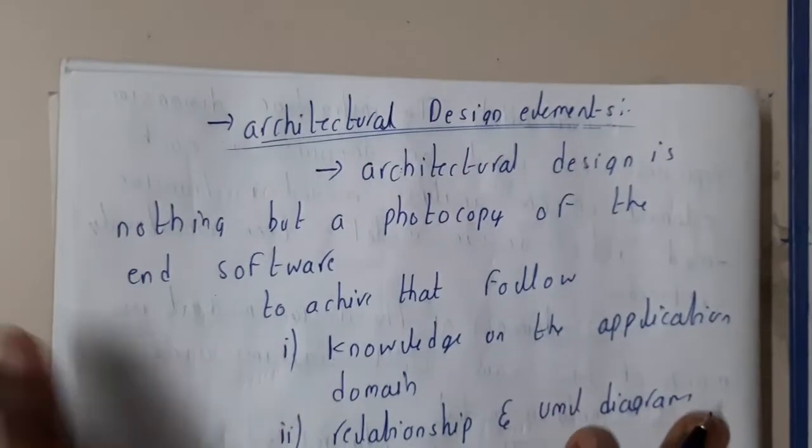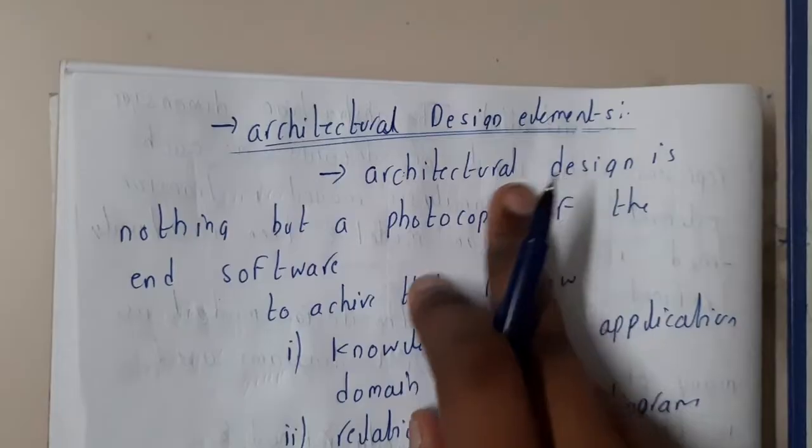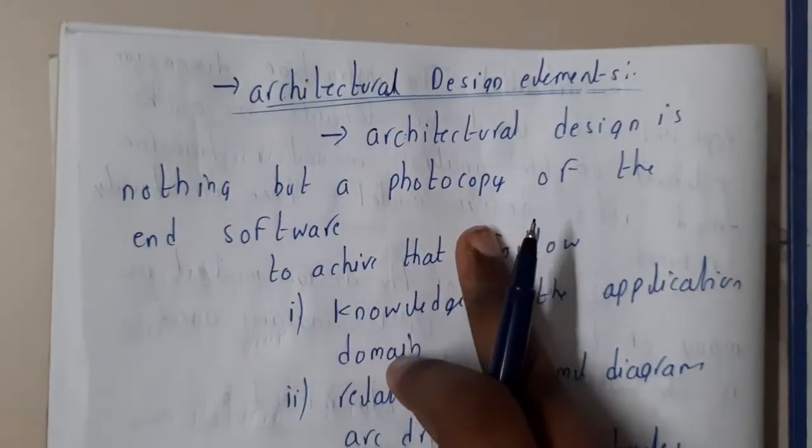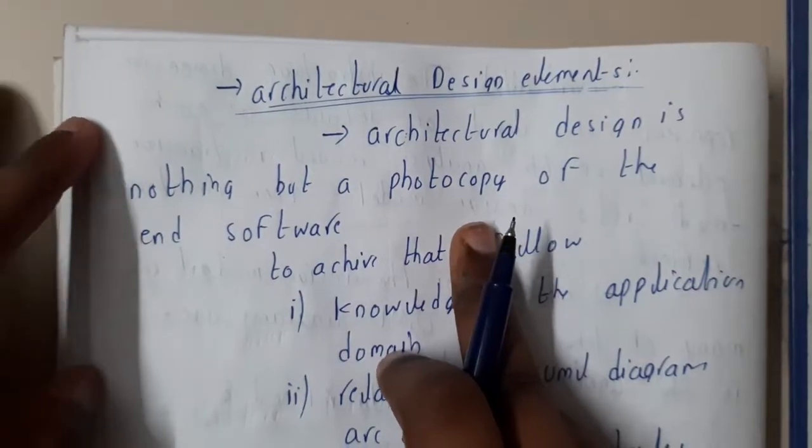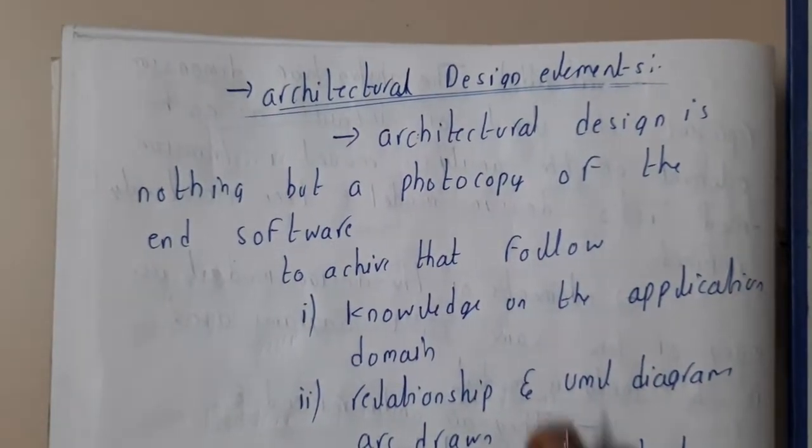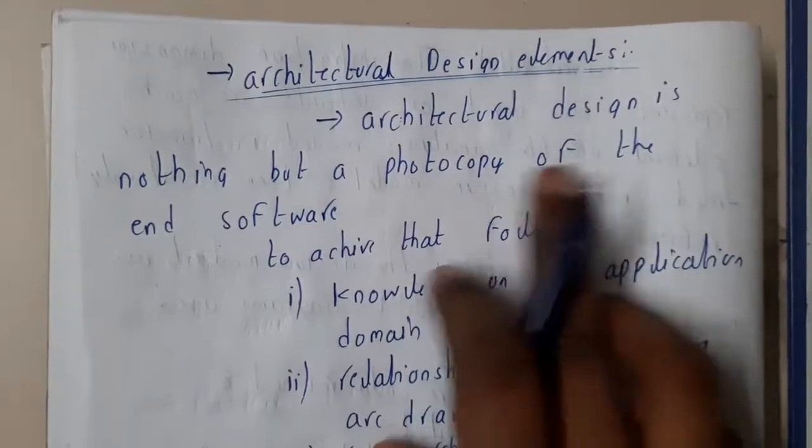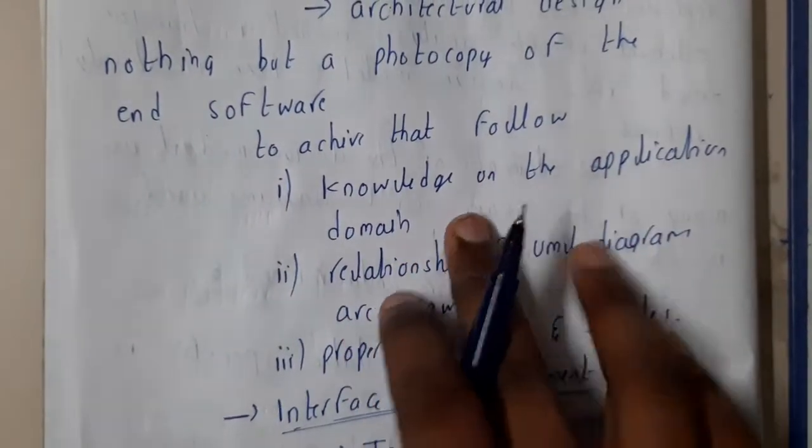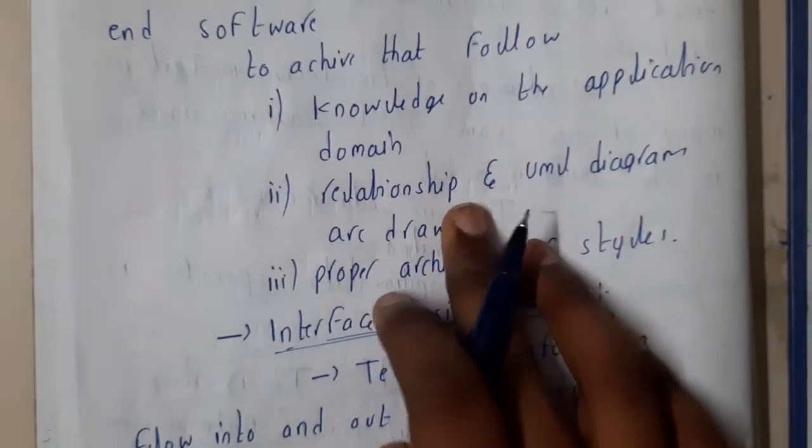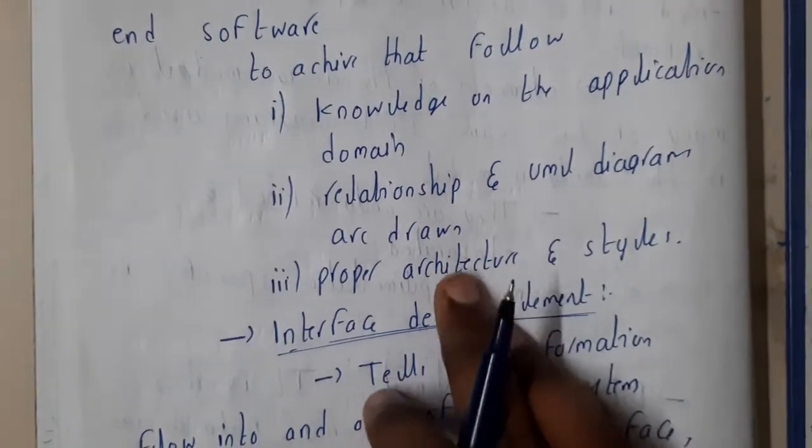Architectural design element is like a photocopy - it is the architecture in which we are using. In order to achieve the following, we need to have the knowledge of the application domain and the relationship between the UML diagrams, and we need to have a proper architecture style.